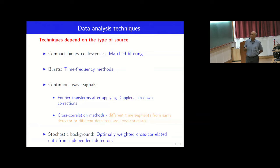For continuous wave signals, there can be Fourier transforms, short Fourier transforms and so on, Doppler spin down, after spin down corrections. Or cross correlation methods: different time segments from the same detector or different detectors are cross correlated and then you can build a large enough SNR above the threshold.